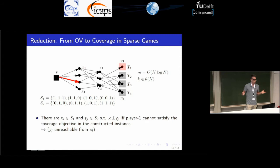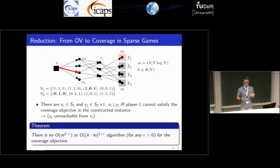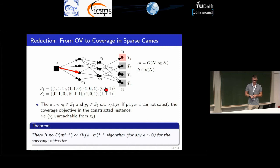This says: if we could solve coverage faster than M² — noting there are O(n log n) edges — then we would have a faster algorithm for the orthogonal vectors problem. You can also state this in terms of targets, since there are Θ(n) targets, giving a running time bound on both edges and targets.